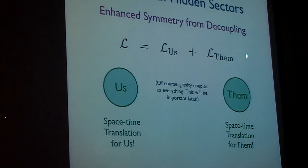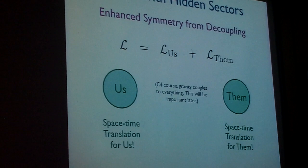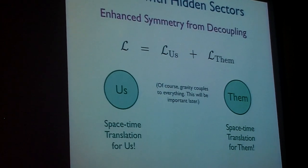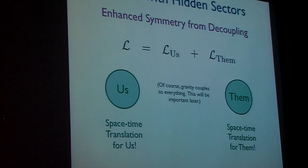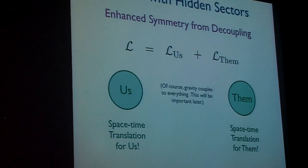They, over there, they don't talk to us. We're completely separated in Lagrangian. They have their own space-time translational invariance. They have their own energy momentum conservation. And so by decoupling fields and interactions, what you get is enhancement of space-time. In this case, we have two space-time translation invariances.